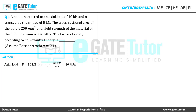Similarly, let us calculate the shear stress due to the transverse shear load on the bolt. Shear stress = 5 × 10³ / 250 mm². The shear stress turns out to be 20 MPa.